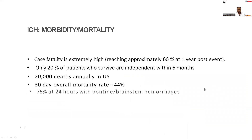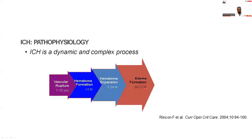The case fatality is extremely high — mortality at one year is 60%. Only 20% of patients who survive are independent within 6 months. Around 20,000 deaths are observed annually, and 30-day mortality is around 44%. In pontine and brainstem parenchymal hemorrhage, it is 75%.